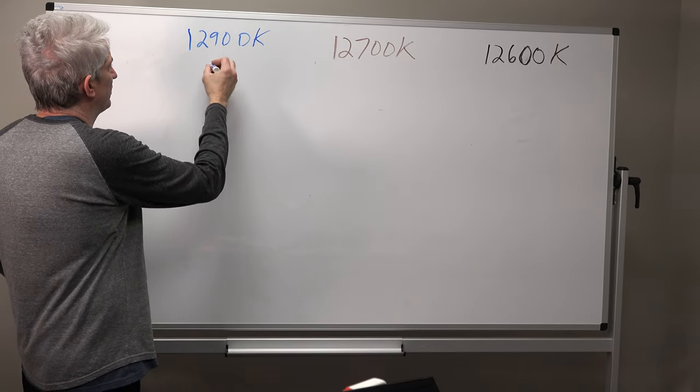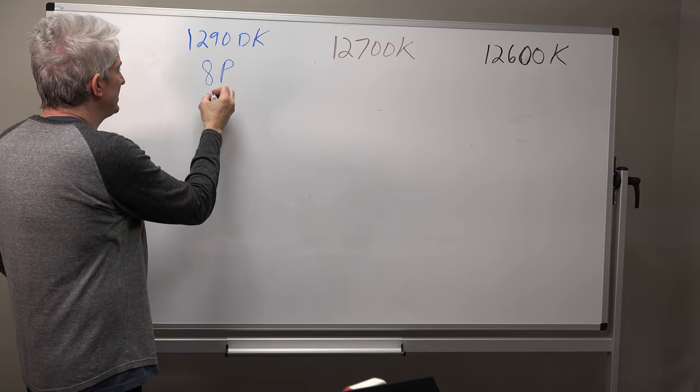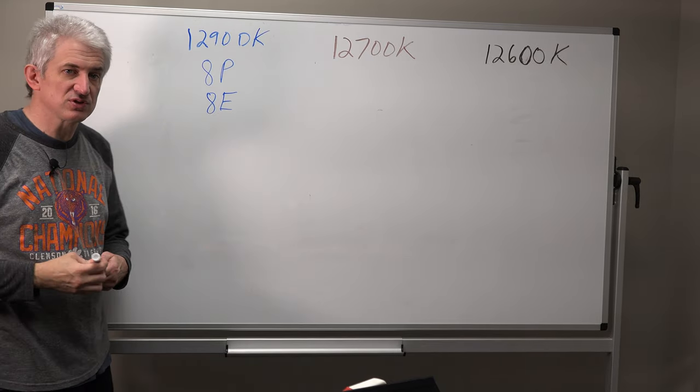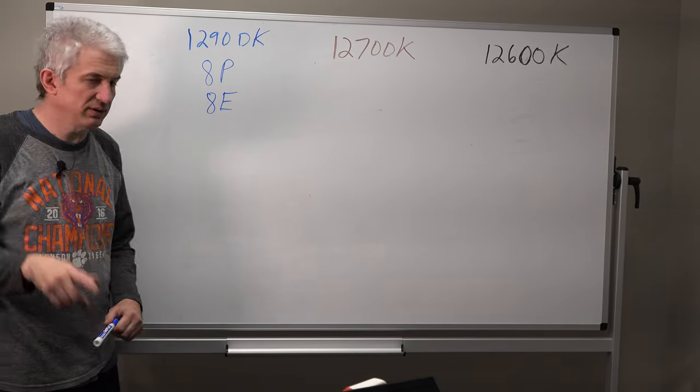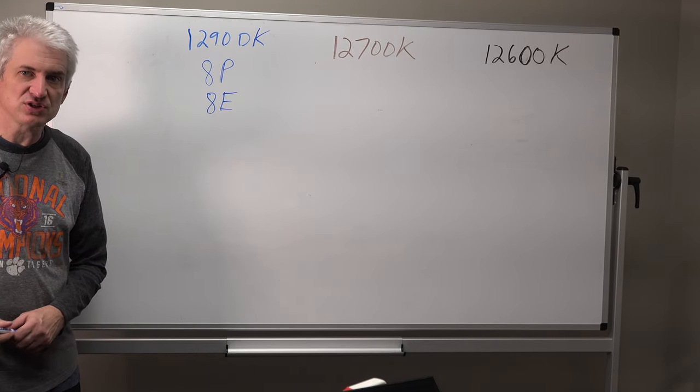So the 12900K has 8 P cores and it has 8 E cores for a total of 16 cores. This is a 16 core processor, but P stands for performance, E stands for efficiency.